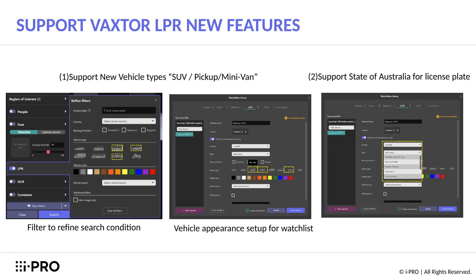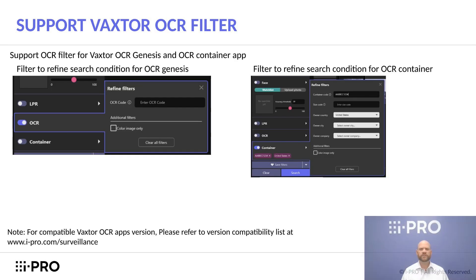This next feature incorporates some new Vaxster functions into the ActiveGuard plugin, supporting new vehicle types such as SUV, pickups, and minivans. We've also added support for Australian states.